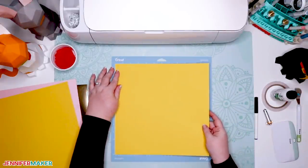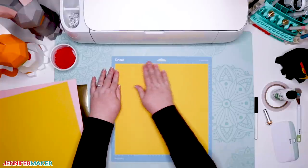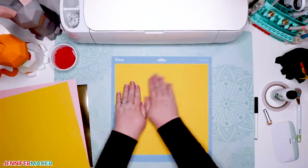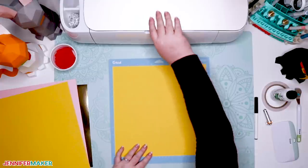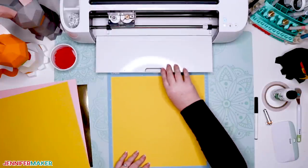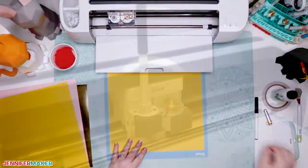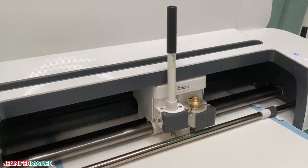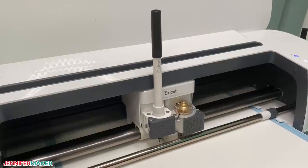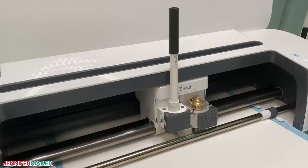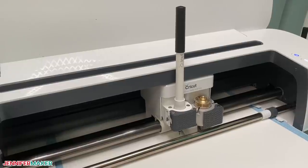Use a clean and sticky blue light grip machine mat for the best results. You can also use a green standard grip machine mat so long as it's not like brand new and super sticky. This is because the simple act of drawing and scoring will press your cardstock into your mat. And you'll find it challenging to remove your cardstock from a super sticky green mat.